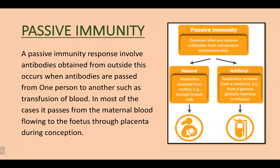A passive immunity response involves antibodies obtained from outside. This occurs when antibodies are passed from one person to another, such as transfusion of blood, or it passes from maternal blood to the fetus through the placenta during gestation. Passive immunity can be natural, such as antibodies received from mother through breast milk which contains IgA type antibodies, or artificial, such as from a gamma globulin injection or infusion.